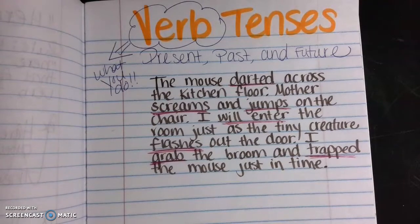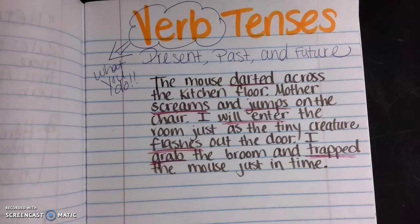We don't know if this story took place today or yesterday or if it will take place tomorrow — it's very confusing. So now what we are going to do is take each of these verbs and categorize them into present, past, and future. Then we'll get more in depth on how to identify which verb tenses to use in your sentences.